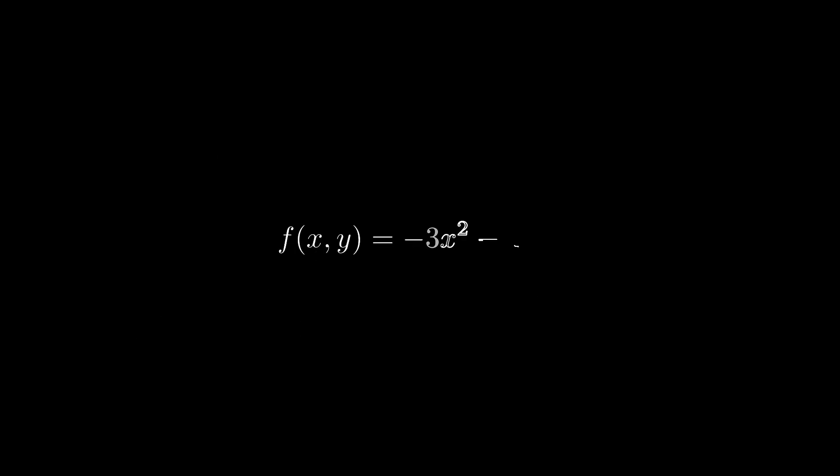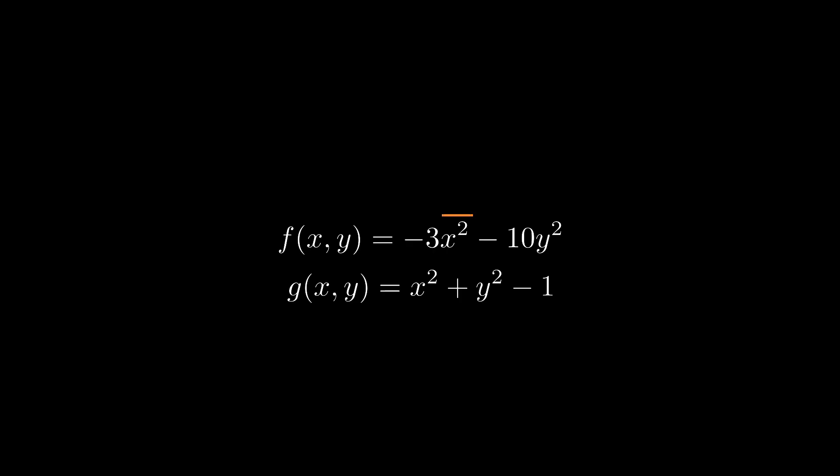For instance, let's look at this slightly different function f of x,y equals minus 3x squared minus 10y squared, and let's find the maximum on the unit circle. Our constraint is g of x,y equals x squared plus y squared minus 1, which has to equal zero. Because this situation is simple enough, we can actually guess the solution by inspection: being on the unit circle means we're trading off a radius of 1 between the x-coordinate and the y-coordinate. If we want to maximize f, we want to put all of the length into x, because that term is less negative than the y term.